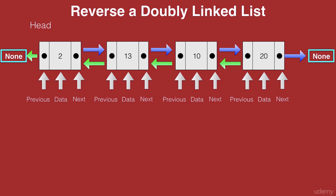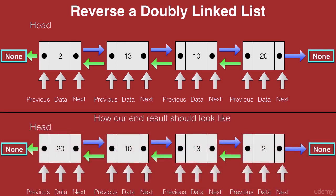Now let's reverse this doubly linked list. When we reverse it, the order of the nodes will be reversed. In our existing list, 20 is the last node, but in the end result 20 is the first node — our head node. Similarly, our existing head node with data 2 becomes the last node in the end result.